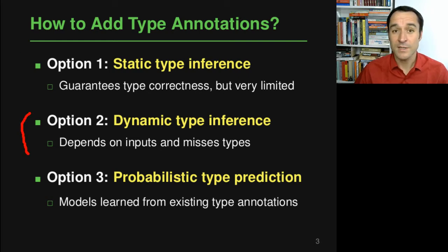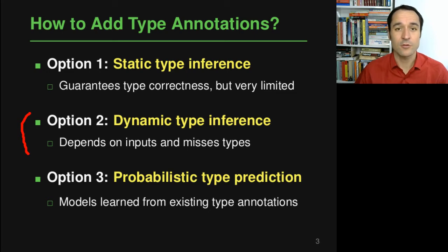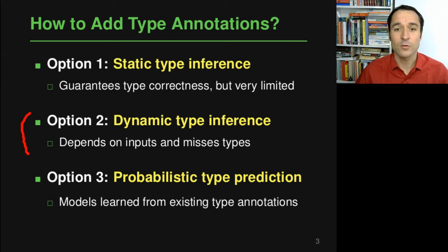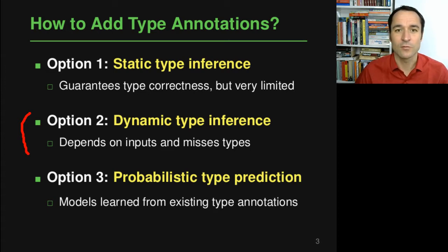Option two is dynamic type inference. Here you run your program and at runtime observe some types, then add those types to the source code. The problem is that depending on the inputs you may see some types but not all possible types, and you may miss a lot of types if not all code is covered.